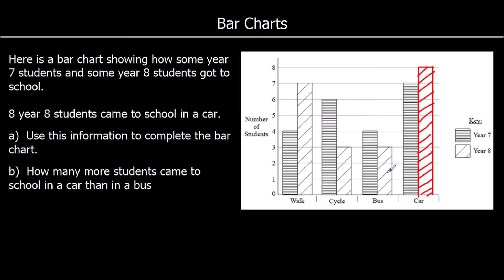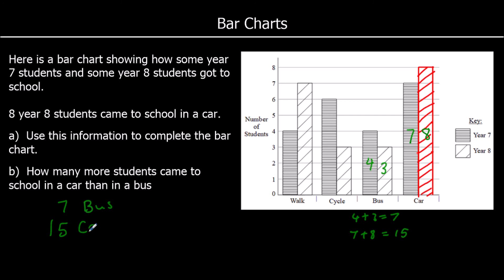Part B says: how many more students came to school in a car than in a bus? How many students in total came to school in a bus? 4 year 7's and 3 year 8's — 4 plus 3 is 7, so 7 went in the bus. For the car, 7 year 7's and 8 year 8's — 7 plus 8 is 15. So 15 came to school in a car. 15 take away 7 is 8, so 8 more came by car.